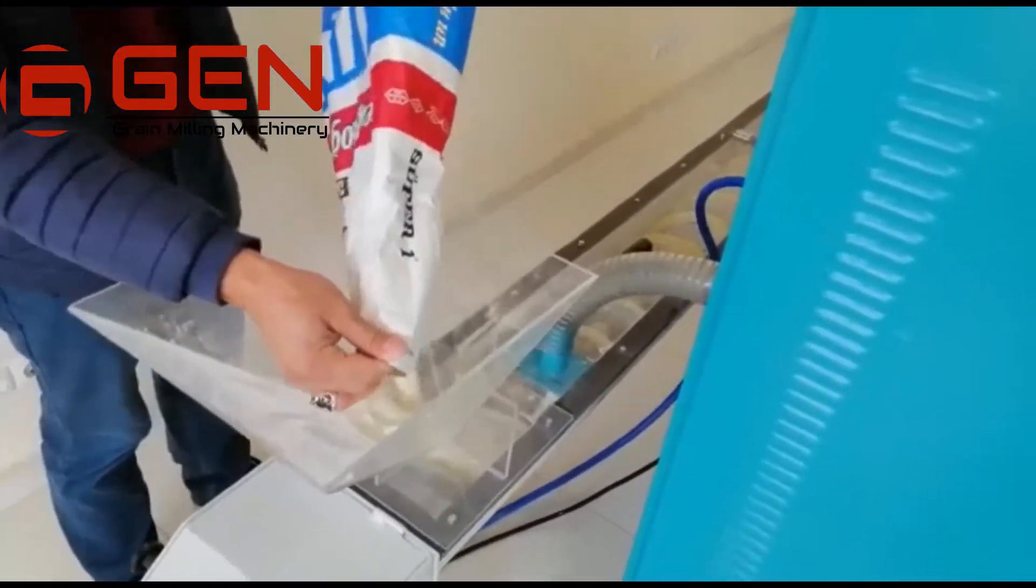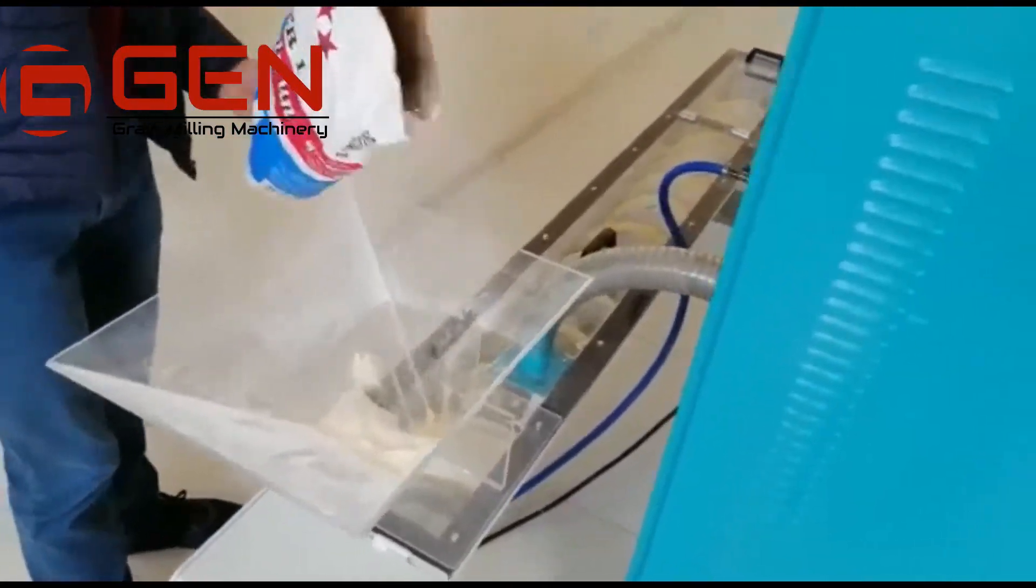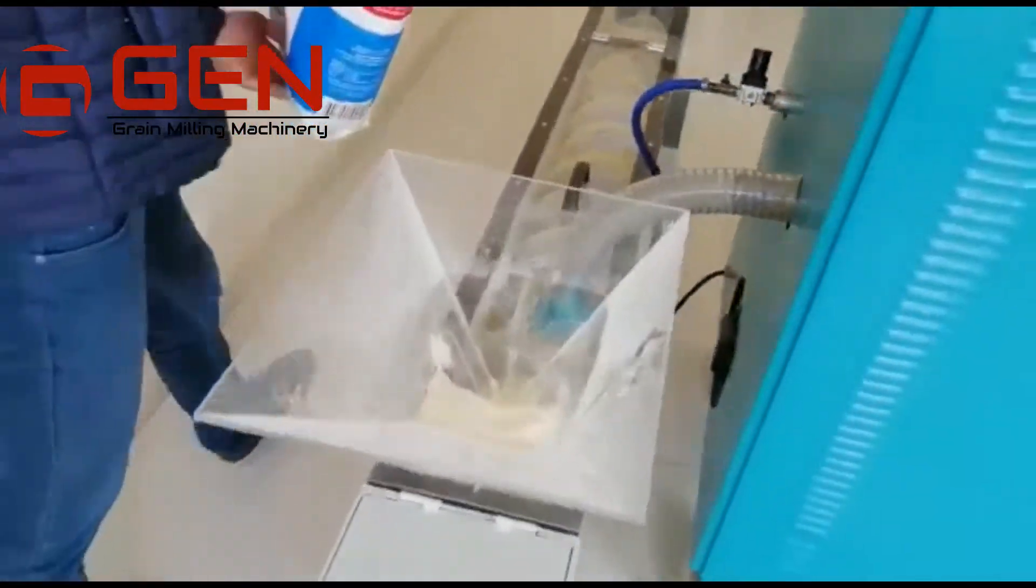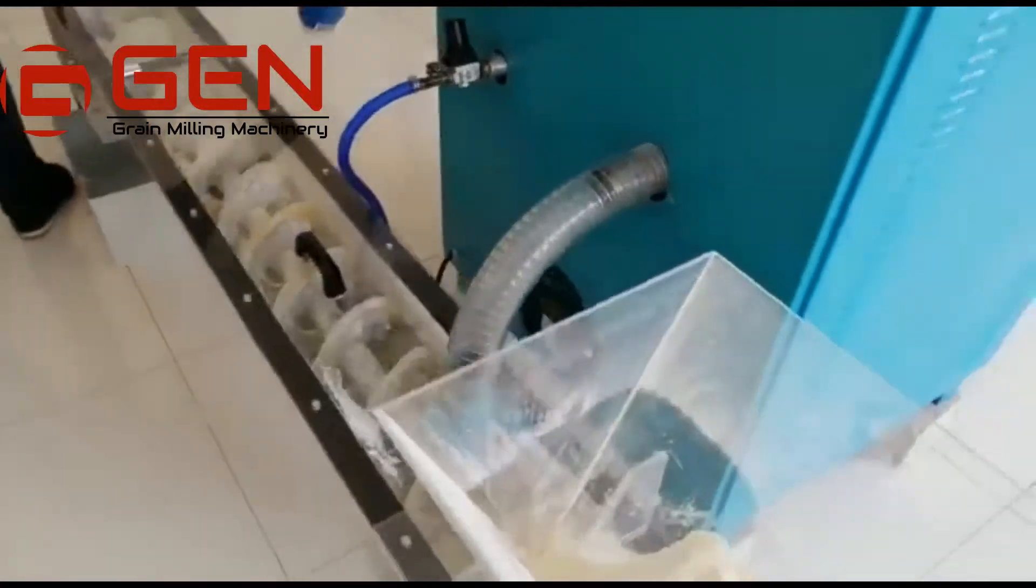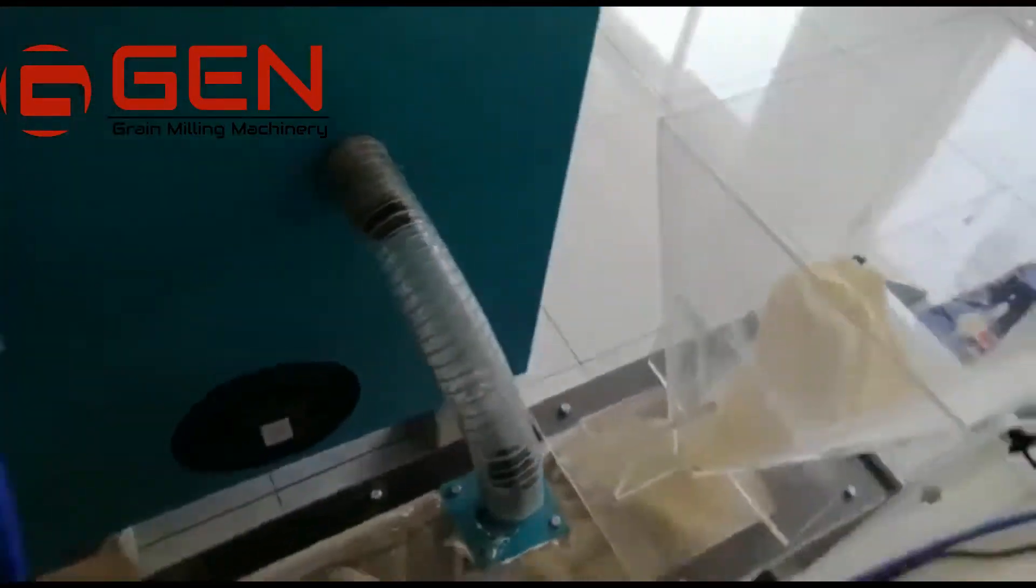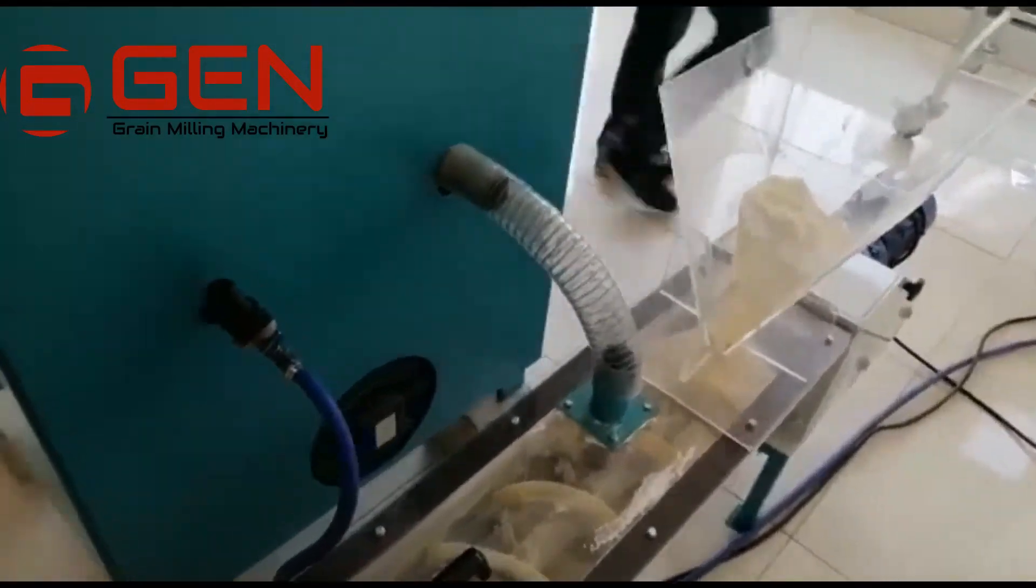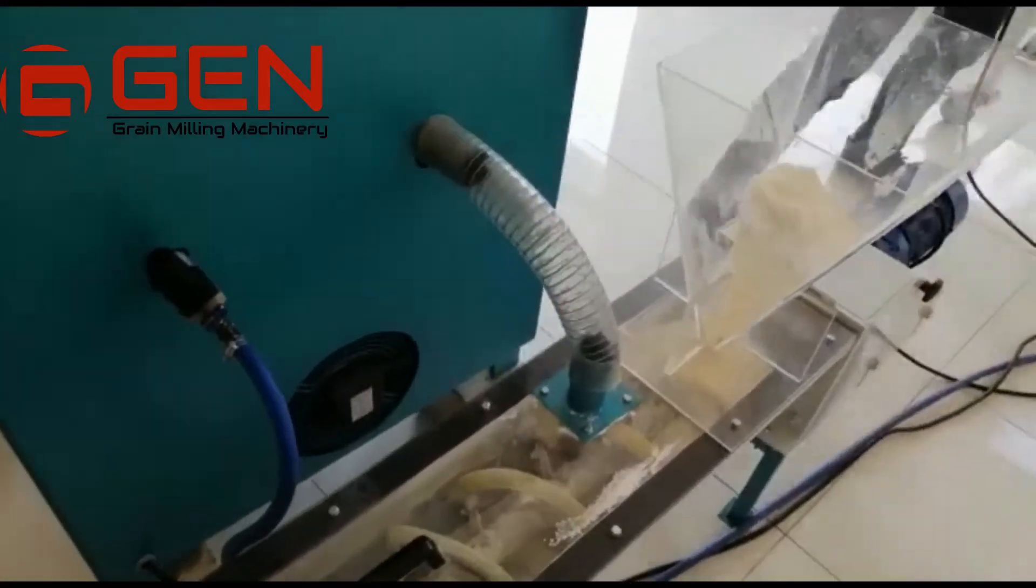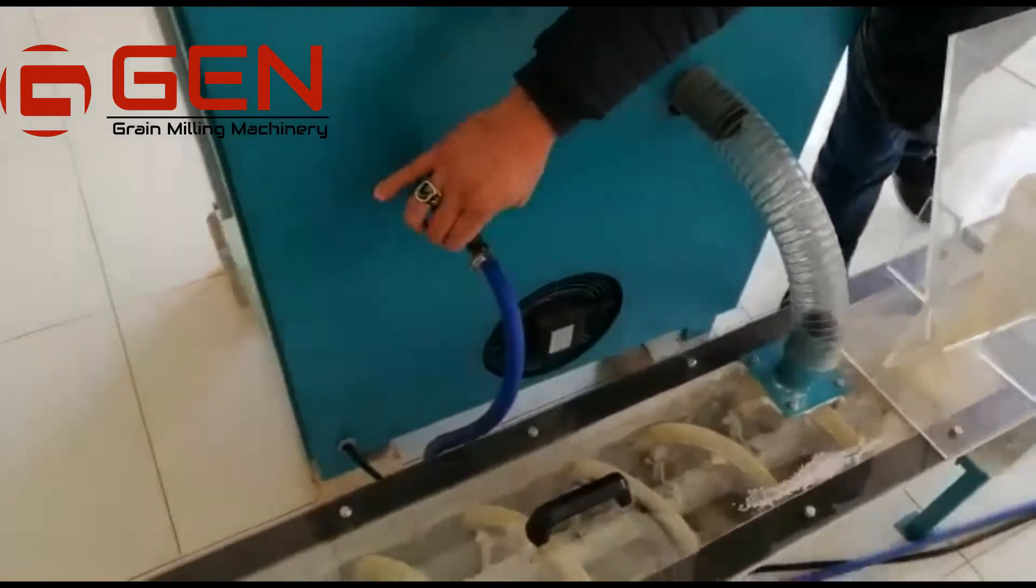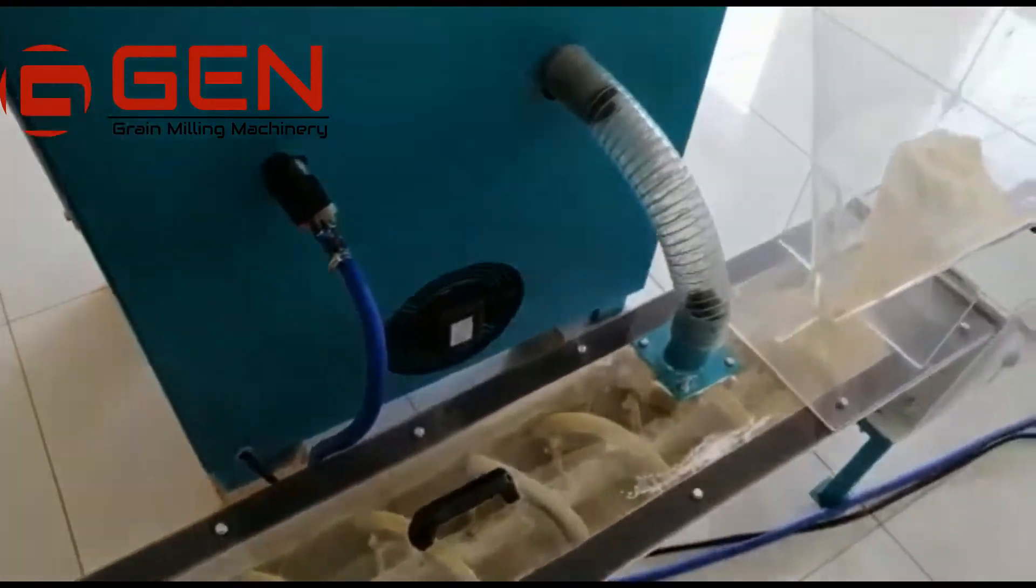We are now pouring the flour into the inlet hopper. The screw conveyor is connected to the ozone machine, and we are giving the ozone.